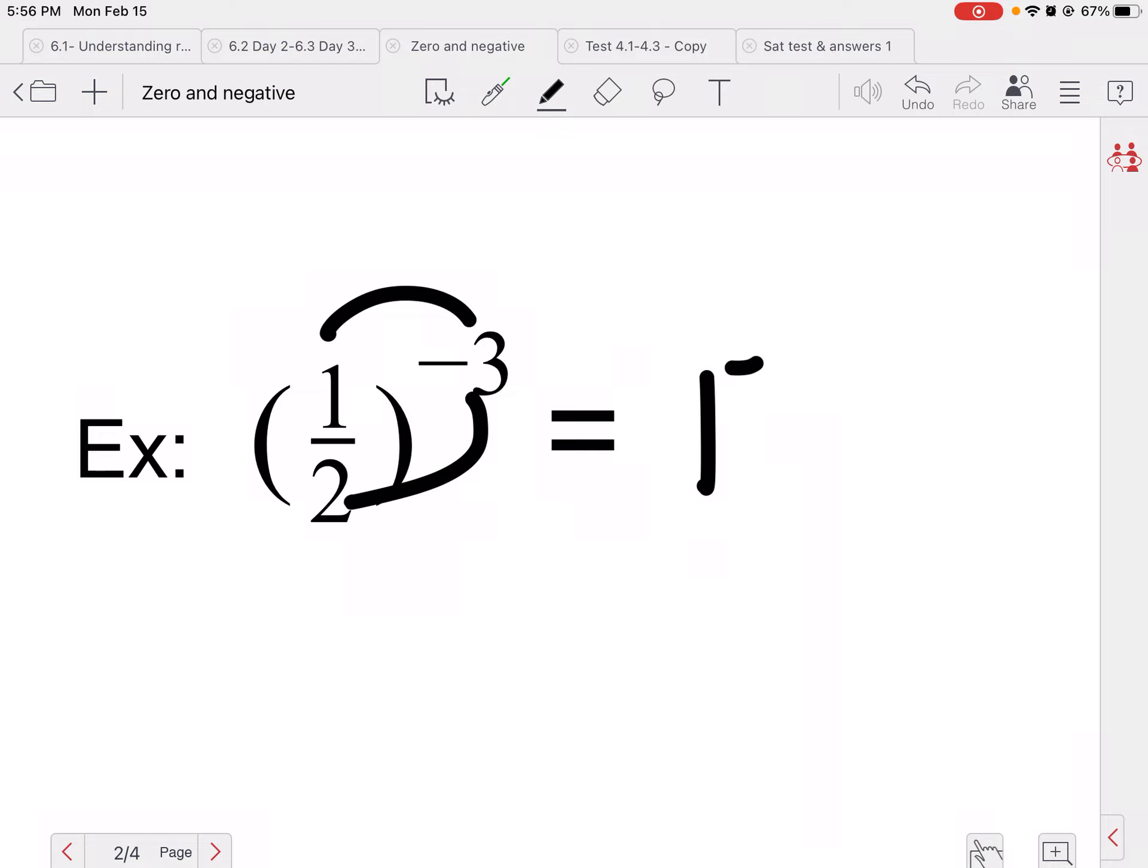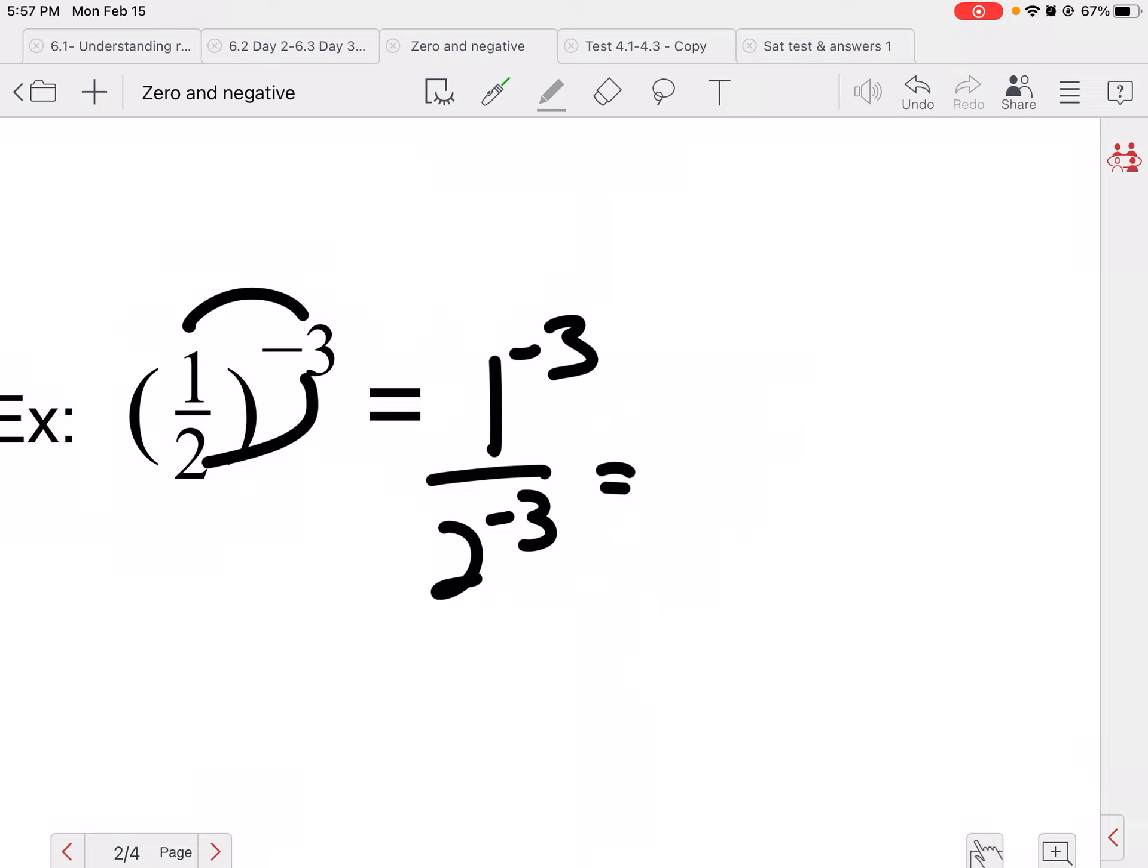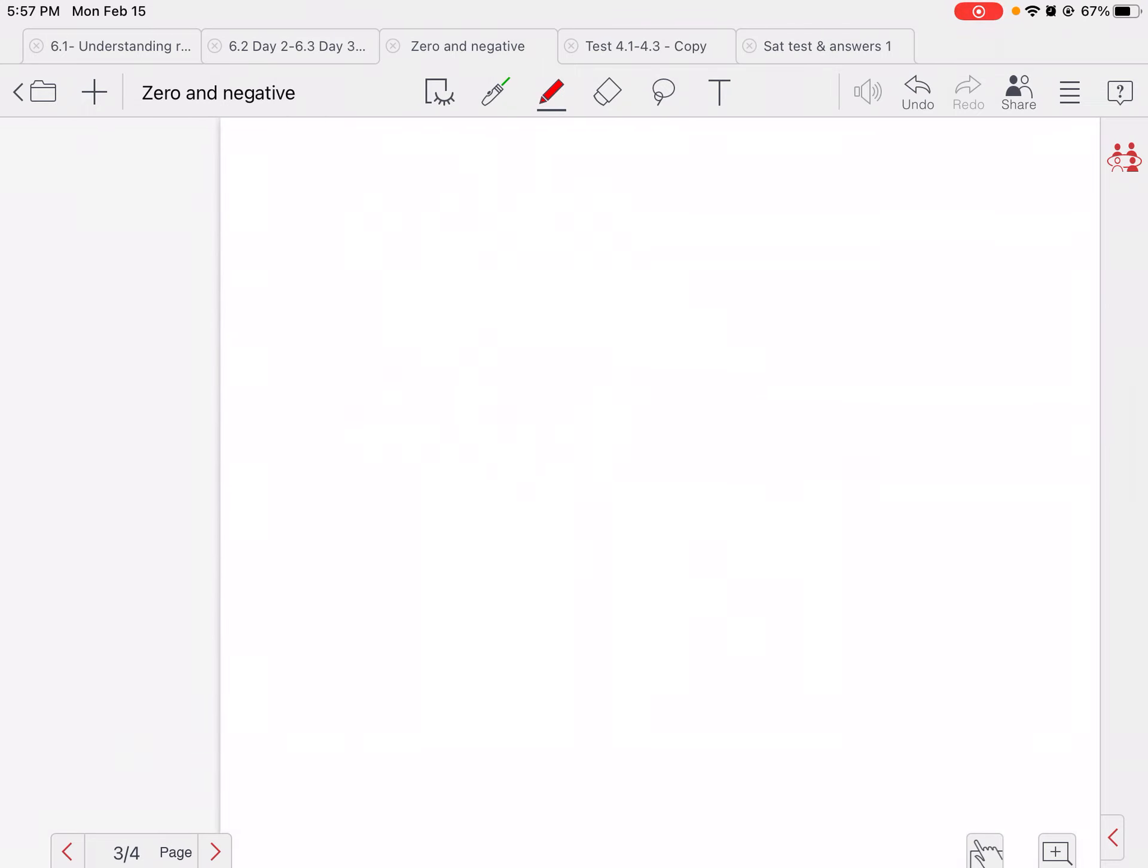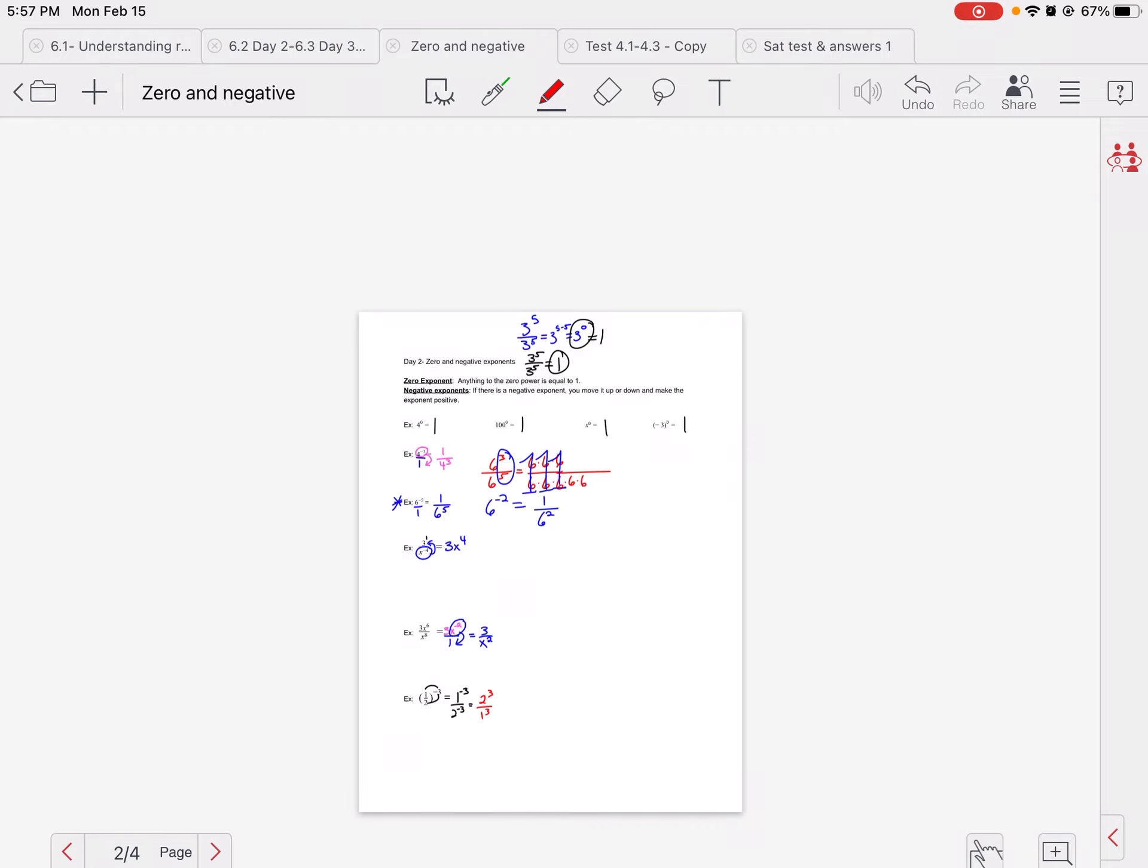All right, now, when we have a fraction, we can distribute this negative three to top and bottom. So this would be 1 to the negative three over 2 to the negative three. And then we're going to flip-flop both of them since they're both negative, so this becomes 2 to the third over 1 to the third.